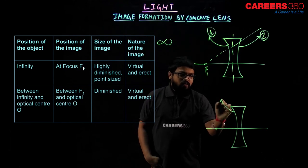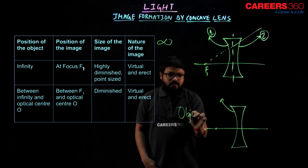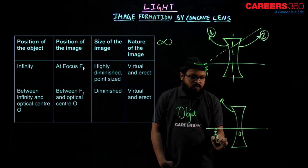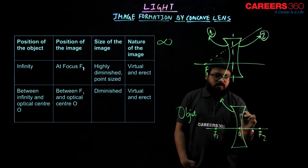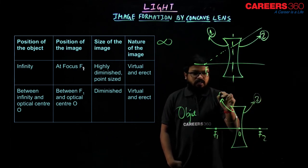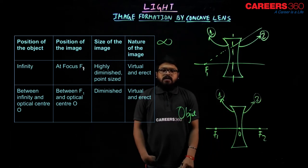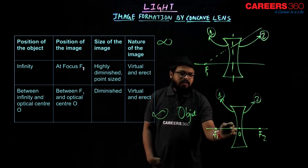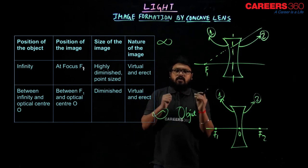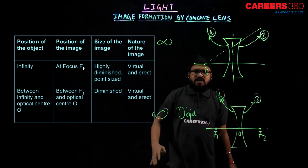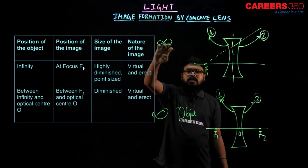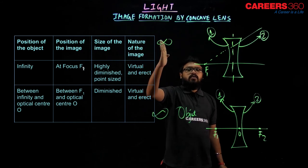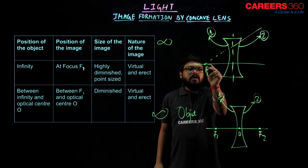If this is our surface 1, with the object somewhere between infinity and optical center O — this is our optical center, this is our focus F1, this is our focus F2 — then the image will always be formed between F1 and O. Just like when the object was at infinity the image was formed at F1, now as we start bringing the object nearer towards O, the image shifts from F1 and moves towards O.